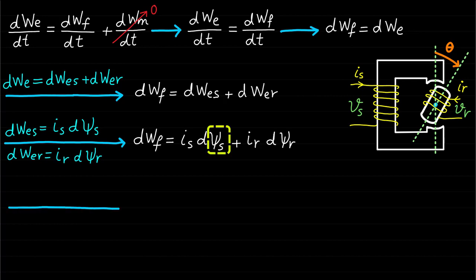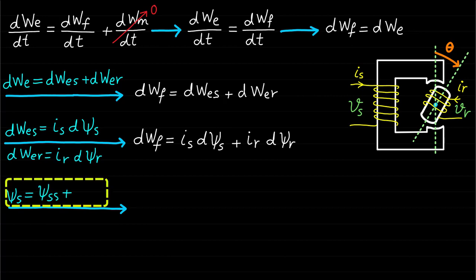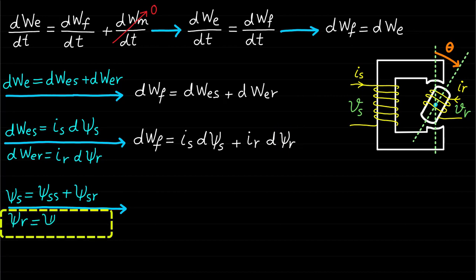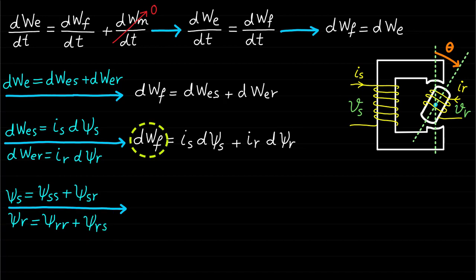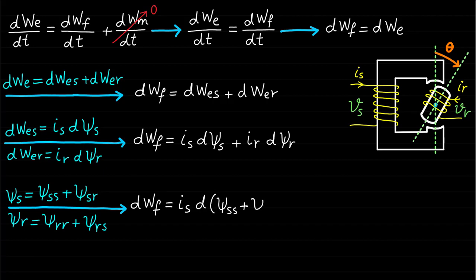The stator magnetic field linkage ΨS equals ΨSS plus ΨSR. The rotor magnetic field linkage ΨR equals ΨRR plus ΨRS. Therefore, the change in field energy DWF can be represented as DWF = Is·d(ΨSS + ΨSR) + Ir·d(ΨRR + ΨRS).